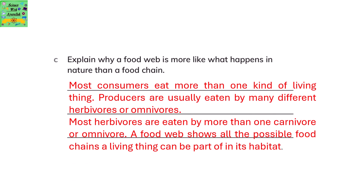Explain why a food web is more like what happens in nature than a food chain. Most consumers eat more than one kind of living thing. Producers are usually eaten by many different kinds of omnivores or herbivores. Most herbivores are eaten by many omnivores or carnivores. In a food chain, you only show one herbivore or omnivore eaten by a carnivore, but in a food web you show all possible combinations of which omnivores or carnivores could eat a particular herbivore.